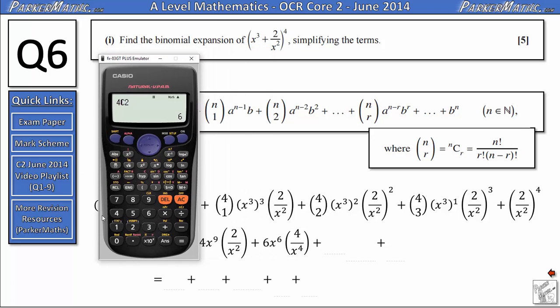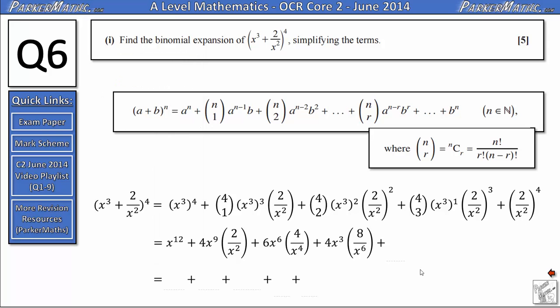For the next term we've got 4 choose 3. And that gives us 4. We're going to have x cubed to the power of 1. That's just 4x cubed then for this term, multiplied by 2 over x squared cubed. Well 2 cubed is 8. And x squared cubed becomes x to the power of 6. So we get 8 over x to the power of 6. The final term 2 to the power of 4 is 16, divided by x squared to the power of 4 gives us 16 over x to the power of 8.